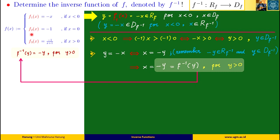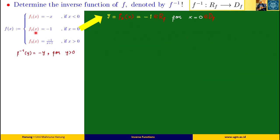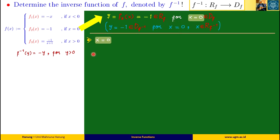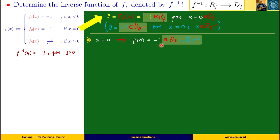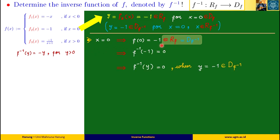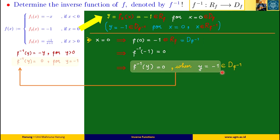Now let's determine the formula for the inverse function of f2. We denote f2(x) as y, so y equals minus 1 for x equals 0. Since x equals 0 and f(0) equals minus 1, we can easily understand that the value of f inverse at minus 1 is 0. So the value of f inverse at y is 0 when y equals minus 1.